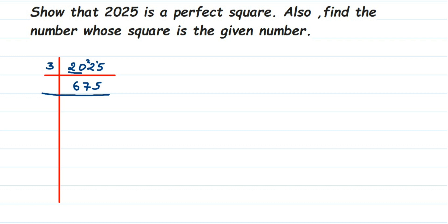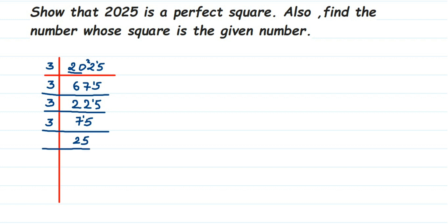We got 675. This again goes into 3: 3×2=6, remainder 1 combined gives 15, 3×5=15. We got 225. This again goes into 3: 3×7=21, remainder 1, combined gives 15, 3×5=15. We got 75. Again 3: remainder gives 15, 3×5=15. We got 25. 25 doesn't go into 3, so next prime is 5: 5×5=25 and 5×1=5.